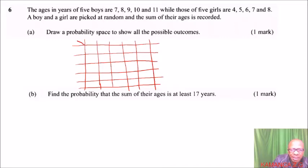We can divide here and say this represents the boys, and these are the girls. So we have 7 for boys, 8, 9, 10, and 11. For girls we have 4, 5, 6, 7, and 8.